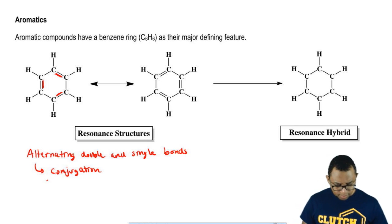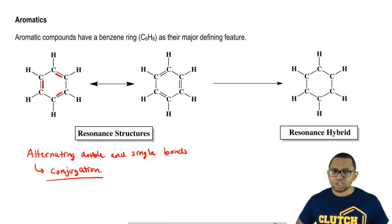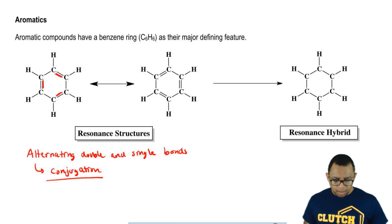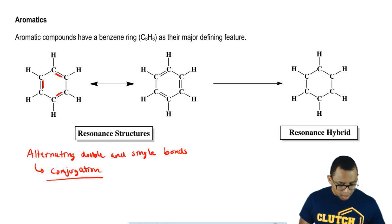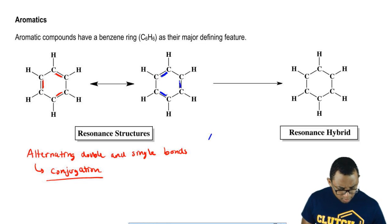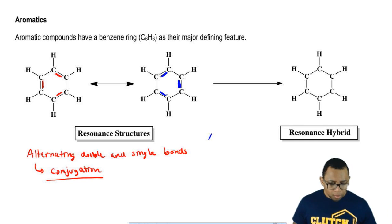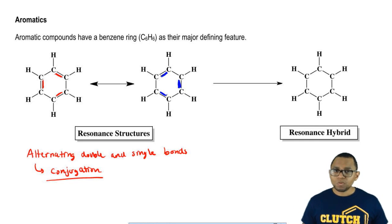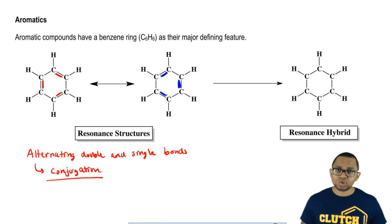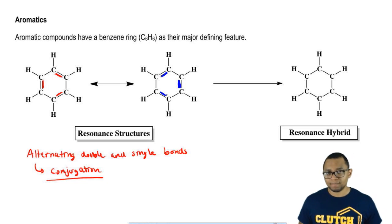Here's the thing about conjugation: if you can draw the bonds alternating, that means you can draw them different ways. The double bonds can go in that orientation, or maybe they go the other way. Both are possible structures, and because we're just moving electrons around, these two drawings represent the resonance structures of benzene.